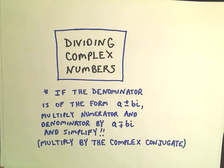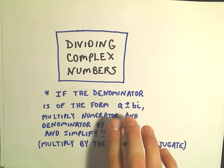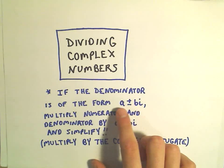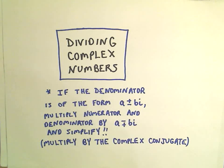In this video, I want to do some examples of dividing complex numbers. The idea in these examples is we're going to have a denominator with a complex number of the form either a plus bi or a minus bi, where b is non-zero.